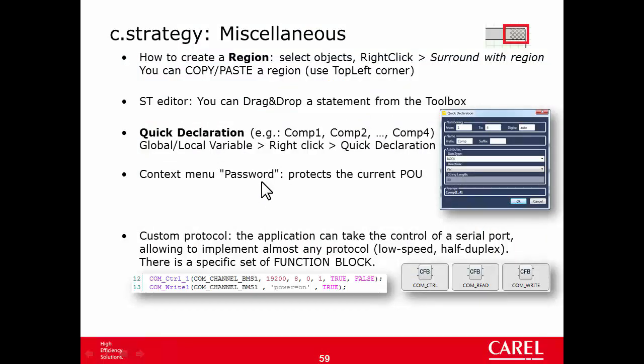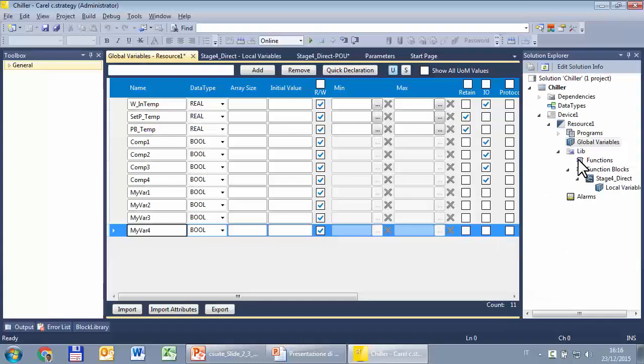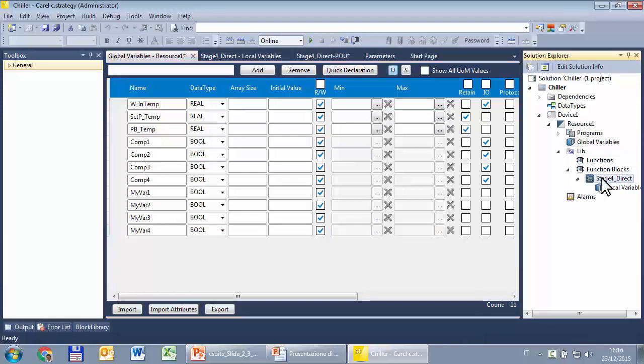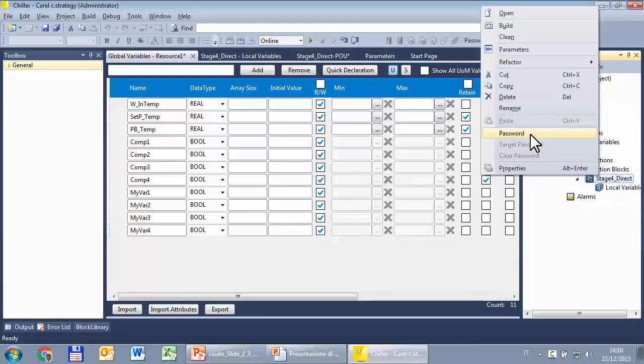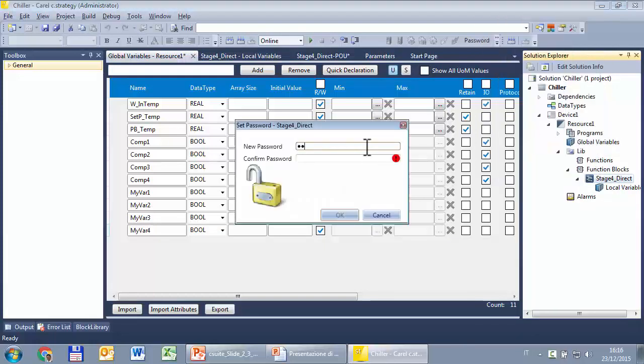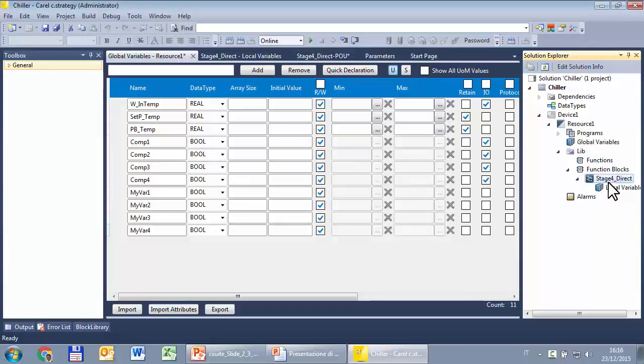Next, password. This regards somehow the intellectual property. So this allows to prevent that someone opens a POU. Example. Let's suppose that this is your project and you have to send it to Carel for support, for example. But you don't want that we are able to open this POU. Well, you can right click, protect with a password. I won't do it. So when a POU is protected, it will be possible to use it, build a solution using it, but won't be possible to open it without the password.